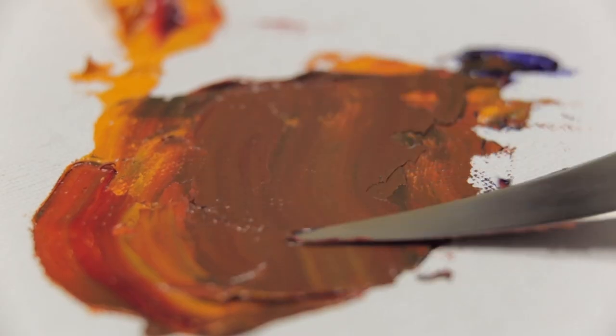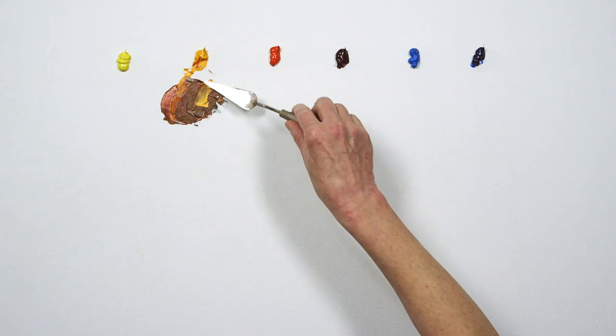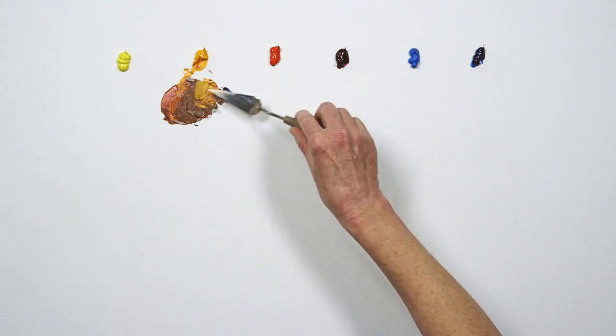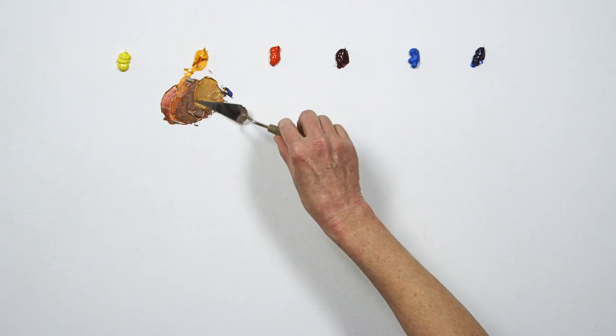You can see that I get a rich, dark brown. I can lighten it slightly by adding more yellow, but because Alizarin and Ultramarine are both transparent and dark, this mixture won't make light value browns without the addition of white.